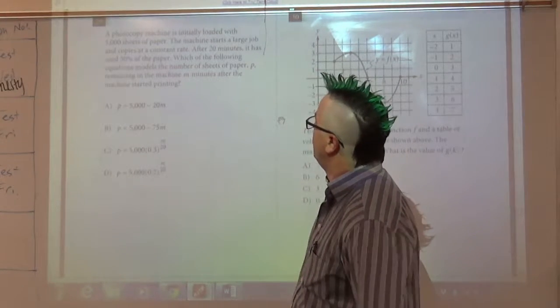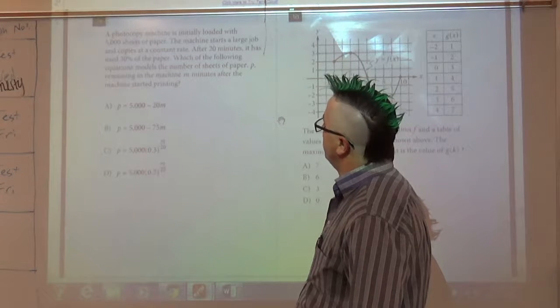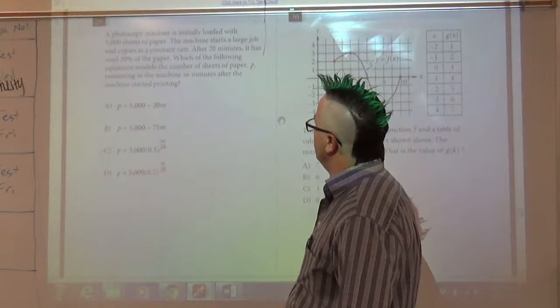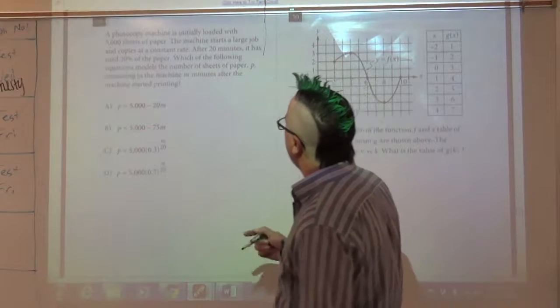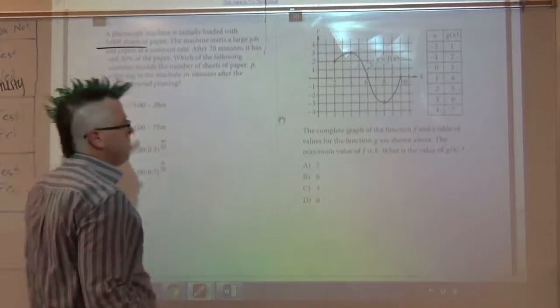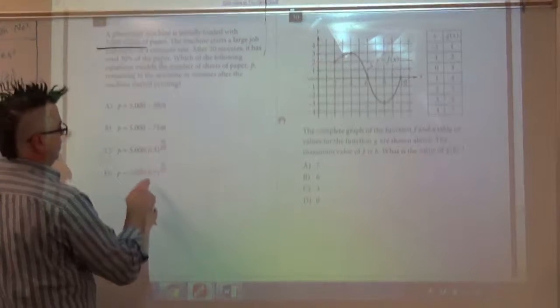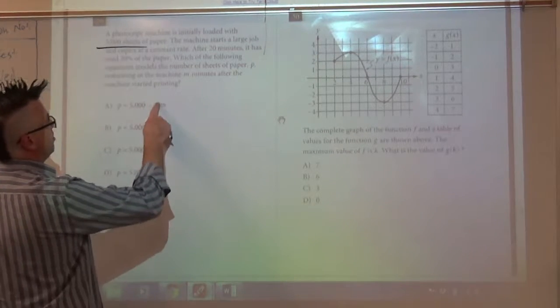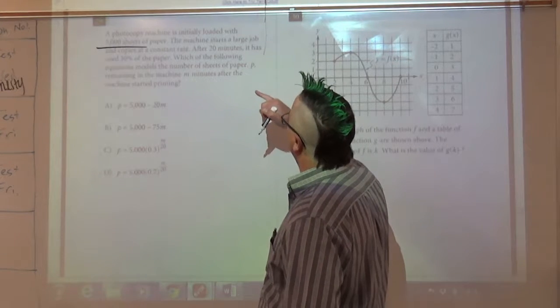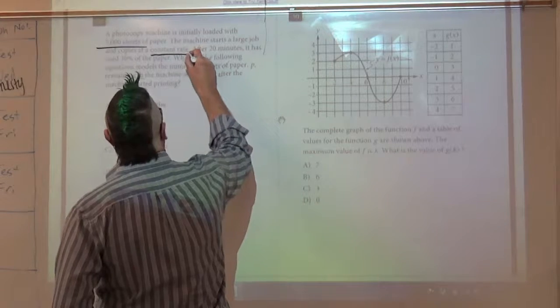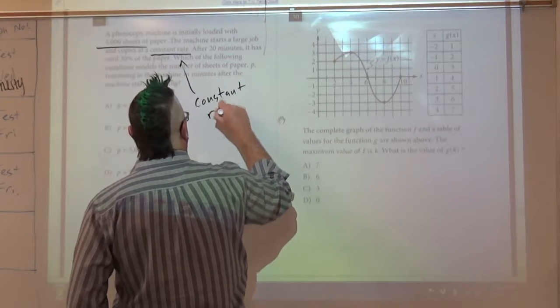Problem 29: The photocopy machine is initially loaded with 5,000 sheets of paper. The machine starts a large job and copies at a constant rate. After 20 minutes, it has used 30% of the paper. Which of the following equations models the number of sheets of paper P remaining in the machine M minutes after it started copying? Alright, so this is our starting point. These are exponential looking models, these are linear looking models. And it does it at a constant rate. Constant rate is basically screaming that it's a line.